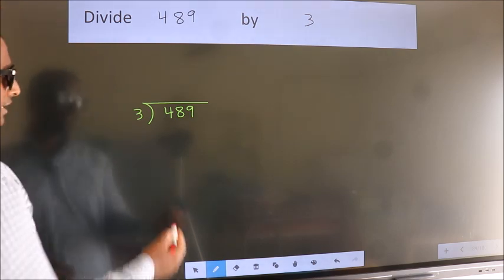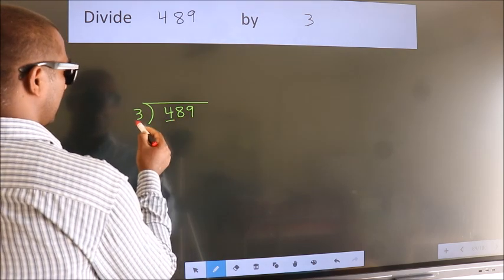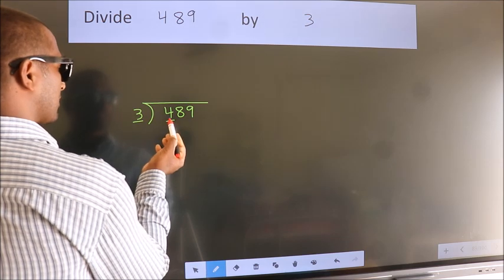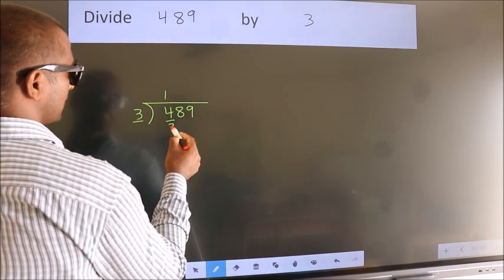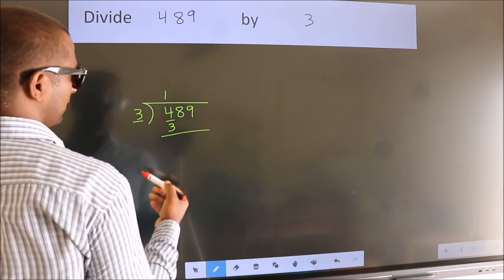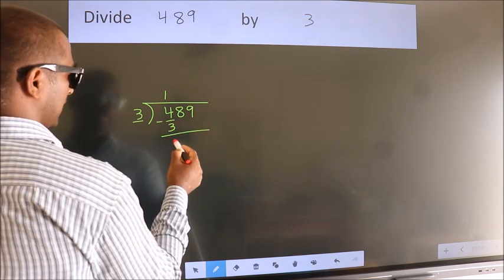Next. Here we have 4, here 3. A number close to 4 in 3 table is 3 once 3. Now we should subtract. We get 1.